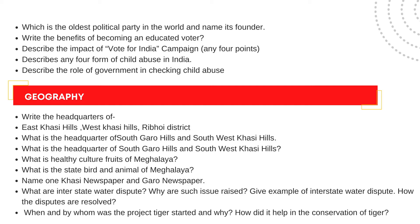Now we go to Geography. Write the headquarters of East Khasi Hills, West Khasi Hills, South Garo Hills, and South West Khasi Hills. What is the culture and food of Meghalaya? What is the interstate water dispute and why are such issues raised? Give an example of an interstate water dispute and how the dispute was resolved.